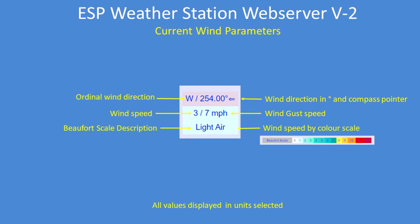For current wind parameters: ordinal wind direction (north east, south east, south west, or north west), degrees of wind direction, and a visual wind direction indicator using arrows. Current wind speed and gust wind speed in your chosen units. The Beaufort scale gives a description of the current wind speed — for example, three miles an hour is light air — and the background colour is taken from the Beaufort wind scale.